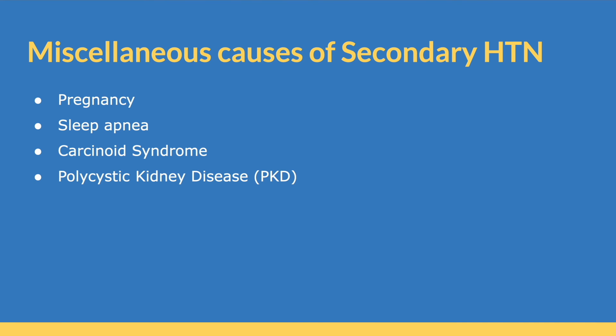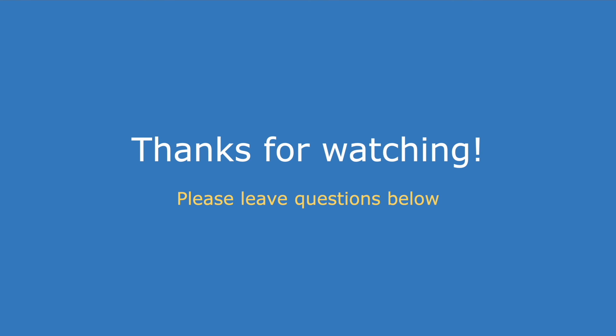To round everything out, a few additional causes that are still important to know for secondary hypertension include pregnancy, sleep apnea, carcinoid syndrome, and polycystic kidney disease. Those are some of the key causes of secondary hypertension. Hopefully this video is helpful — if you have any questions, please leave them below. Thanks for watching.